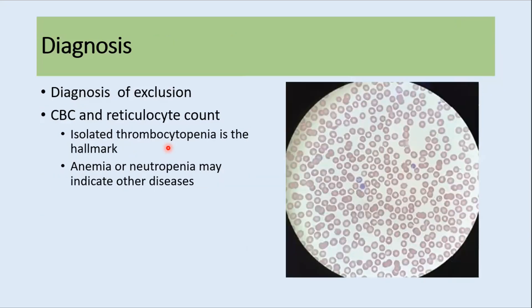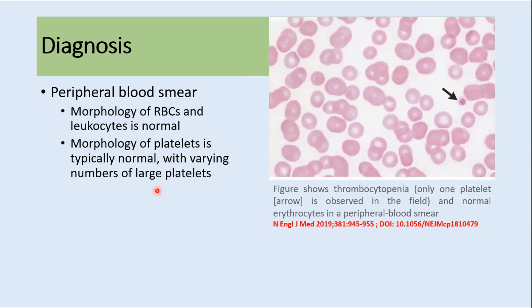ITP is a diagnosis of exclusion — we need to exclude all other possible causes of thrombocytopenia. On CBC there can be isolated thrombocytopenia; if there is anemia or neutropenia, other diseases must be considered. On the peripheral blood smear, morphology of RBCs and leukocytes is normal, and platelet morphology is also typically normal with varying numbers of large platelets. The smear may show only one platelet alongside normal erythrocytes.